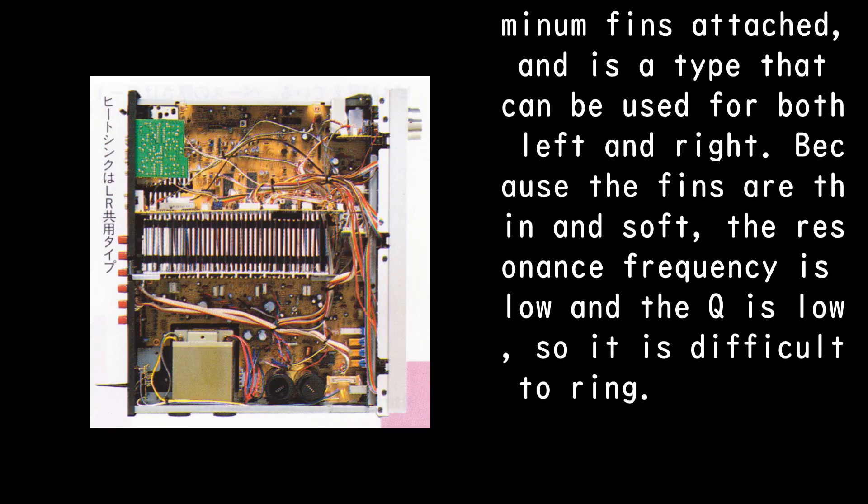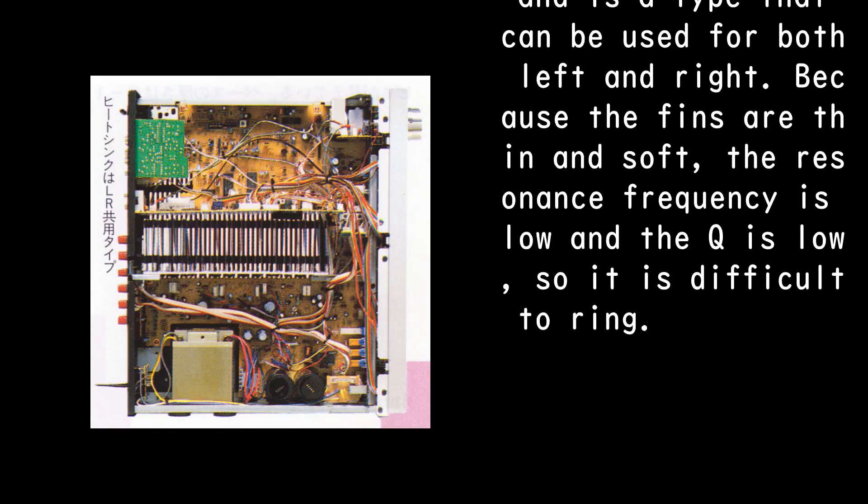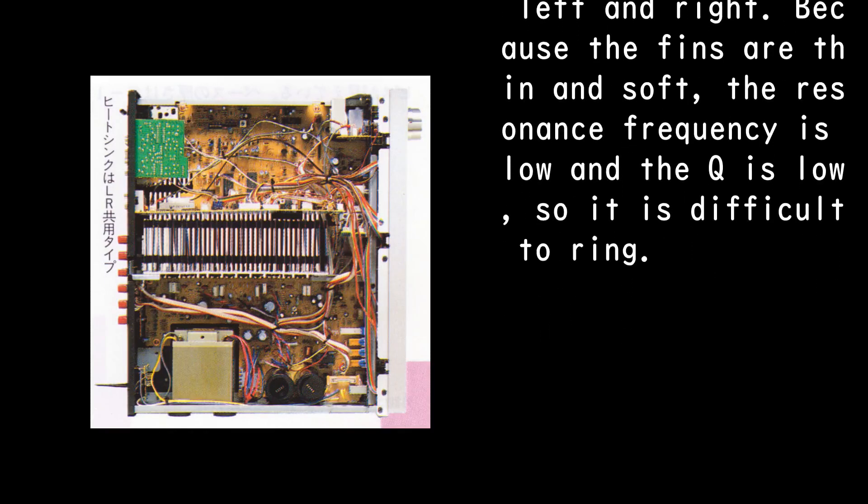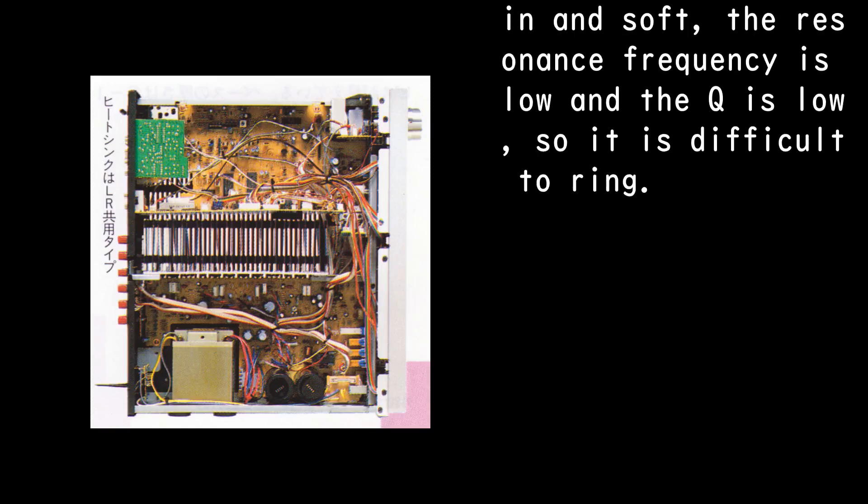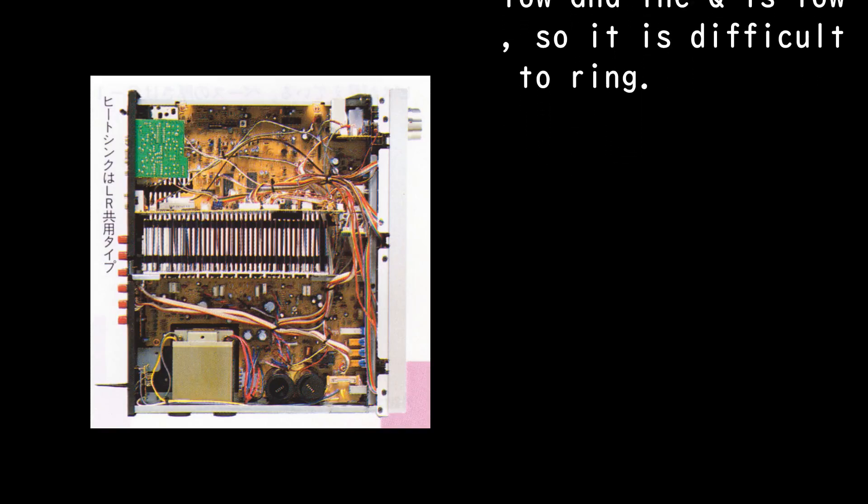The heat sink is a 3 millimeters thick aluminum plate with 26 thin aluminum fins attached, and is a type that can be used for both left and right. Because the fins are thin and soft, the resonance frequency is low and the Q is low, so it is difficult to ring.